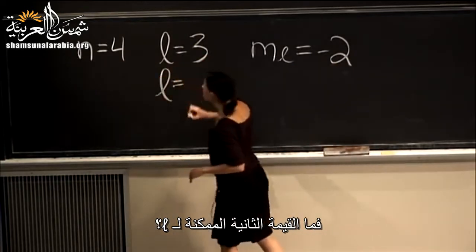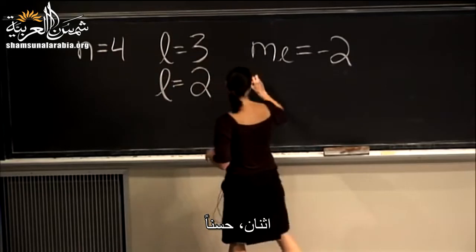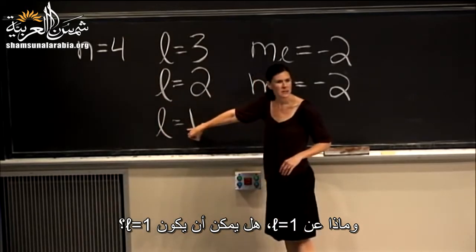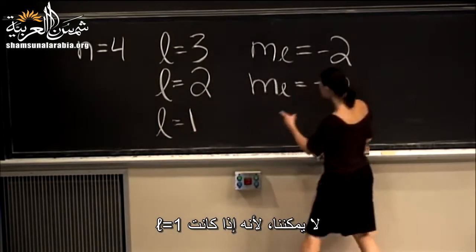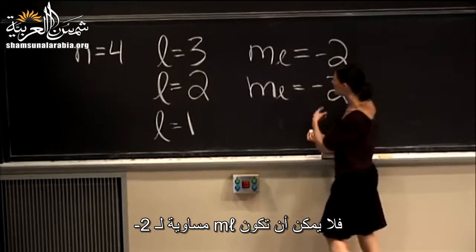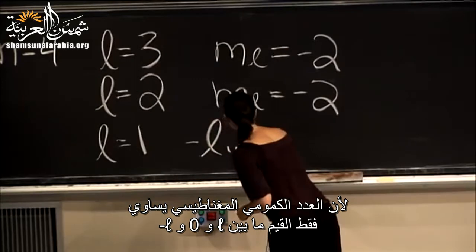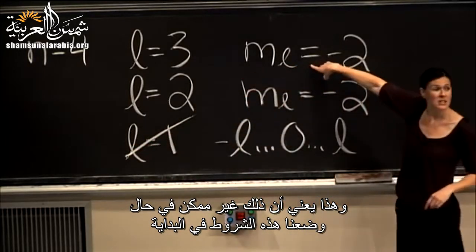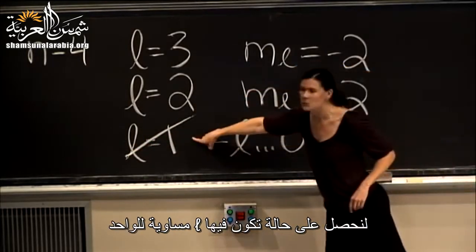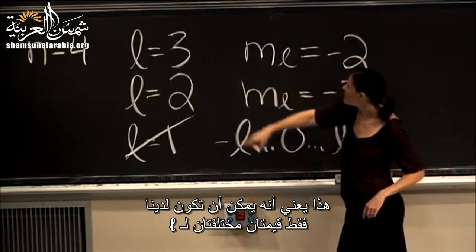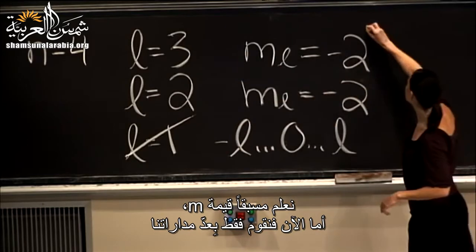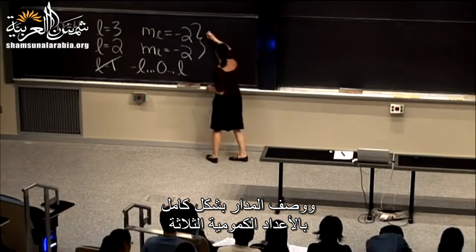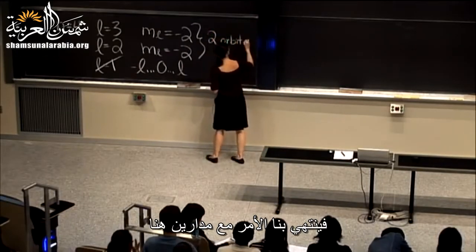What's the second value of l that we can have? 2. So we can have this orbital here. What about l equals 1? No, we can't, because if l equals 1, we cannot have m sub l equal negative 2, because the magnetic quantum number only goes from negative l to positive l. So it's not possible to have l equals 1. This means we can only have two different values of l, and an orbital is completely described by the three quantum numbers, so we end up having two orbitals.